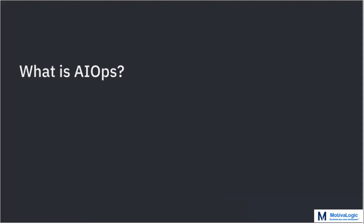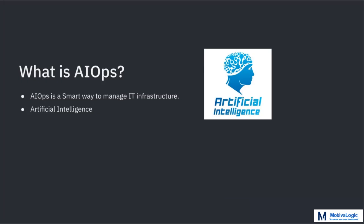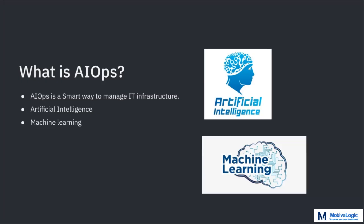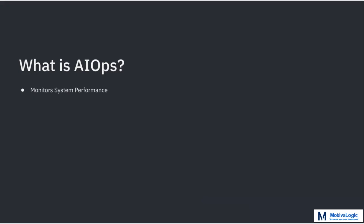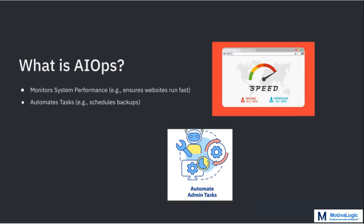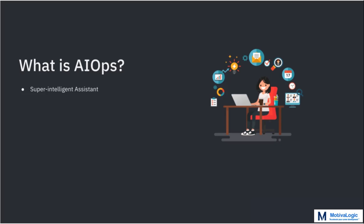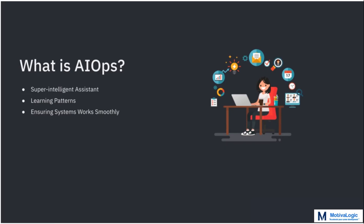Let's start with a simple definition. AIOps is a smart way to manage IT systems using artificial intelligence and machine learning. It can keep an eye on how your systems are performing, like checking if a website is running fast enough. It schedules tasks automatically, such as making sure backups of your important data are saved on time. If something goes wrong, it can figure out what caused the issue and suggest or apply solutions. With AIOps, it's like having a super intelligent assistant watching over everything, learning patterns, and ensuring your systems work smoothly.